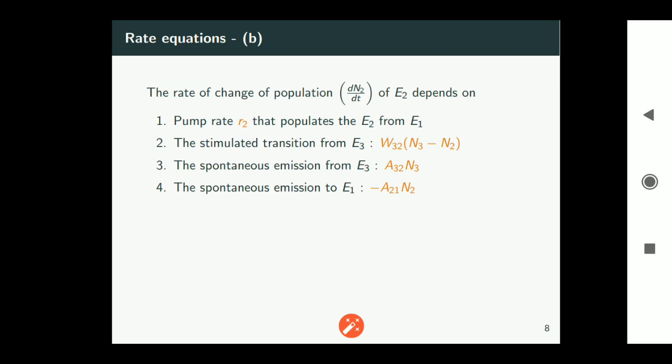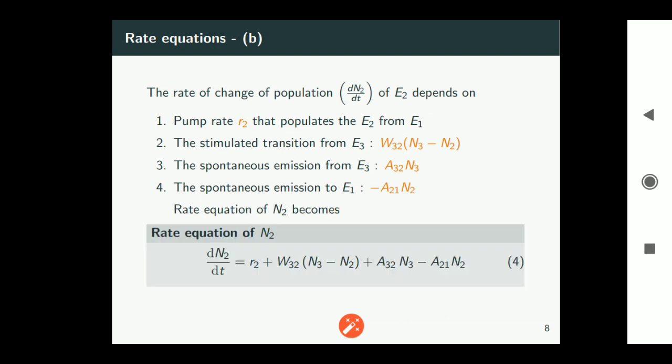So with all these, rate of change of population of e2 is the rate equation of n2. That is given by dn2/dt which is equal to r2 plus w32*(n3 minus n2) plus a32*n3 minus a21*n2. This is equation 4.